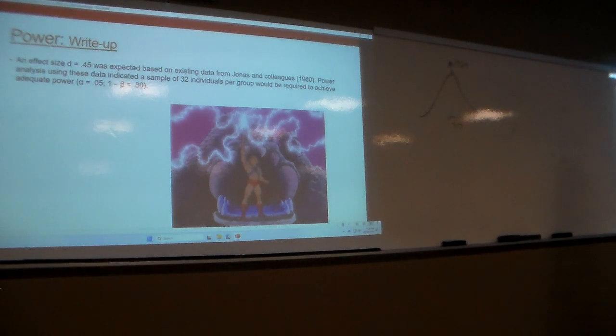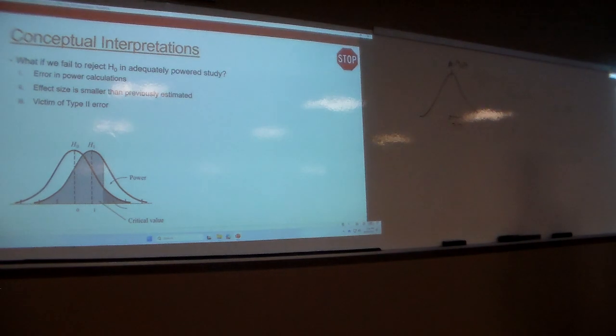So here's my power write-up. Effect size 0.45 expected based on existing data from Joan and colleagues. Power analysis, these data indicated a sample of 32 individuals per group would be required to achieve adequate power. Really quick, really easy, not hard. We're just saying, this is the effect size that I'm expecting based on these folks. Power analysis tells me that 32 people would be able to achieve adequate power. So with your power analysis, the big thing is letting people know what you're basing that effect size estimate on. That's critical.